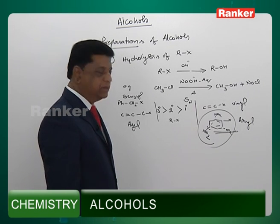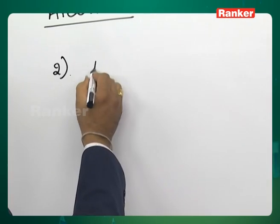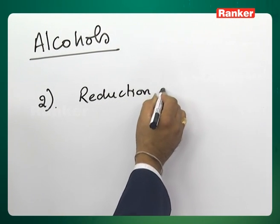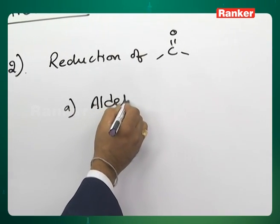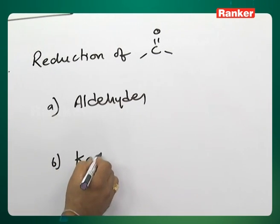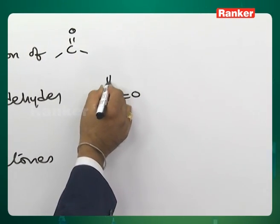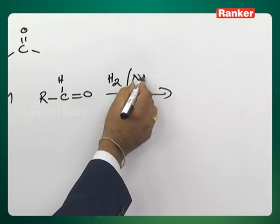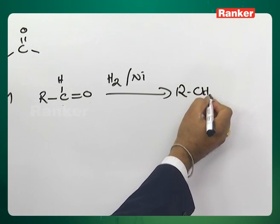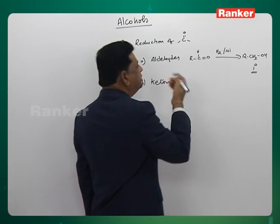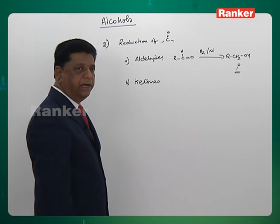All alkyl halides give the corresponding type of alcohol — this is the first and the simplest, easiest method. The second method is preparation of alcohols by reduction of aldehydes and ketones. Reduction of a carbonyl compound can be subdivided into reduction of aldehydes and reduction of ketones. Both give the corresponding alcohols. Any aldehyde starting from formaldehyde can be reduced using hydrogen and a catalyst like nickel — it is an addition reaction where one H is added to each side and the compound becomes a primary alcohol.